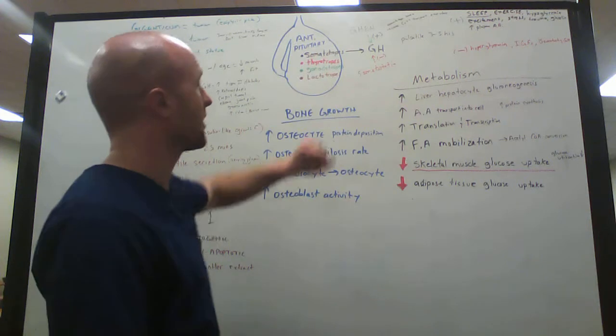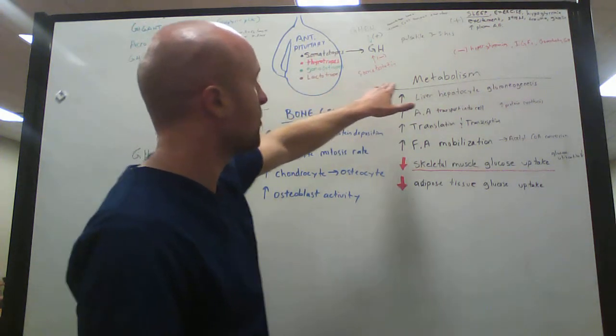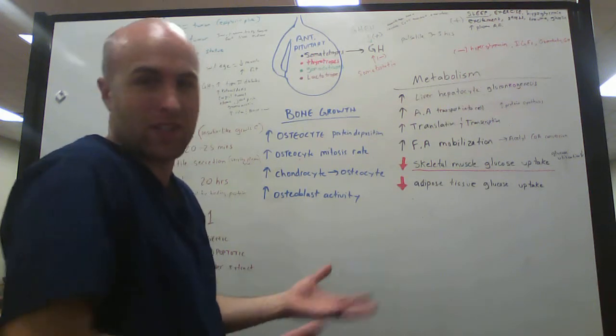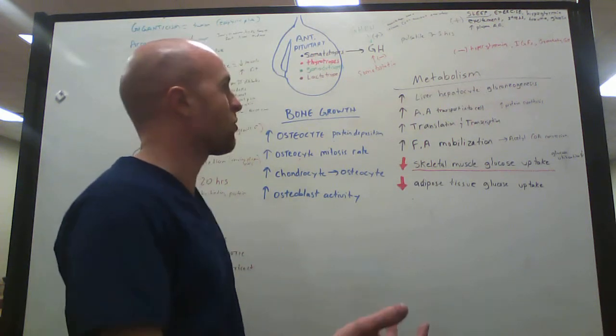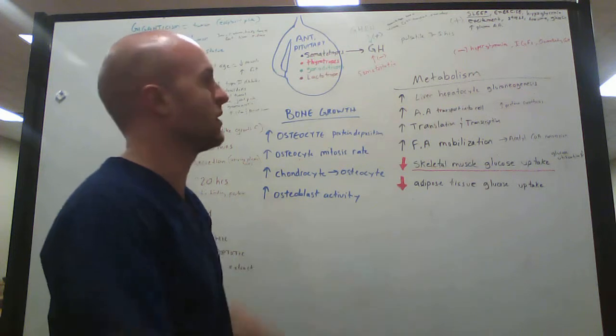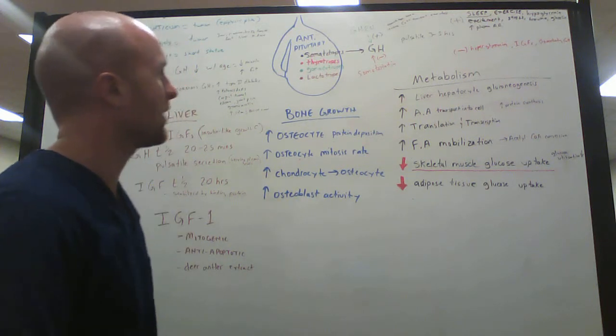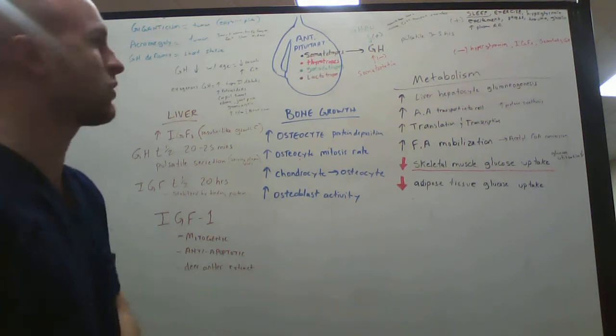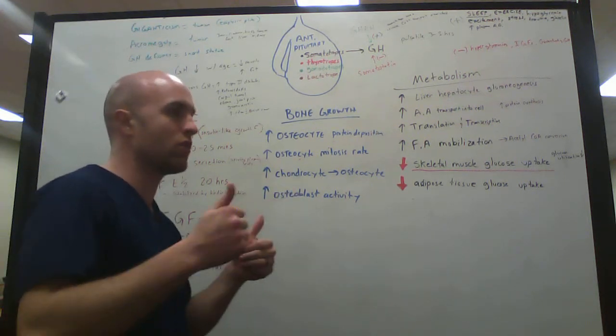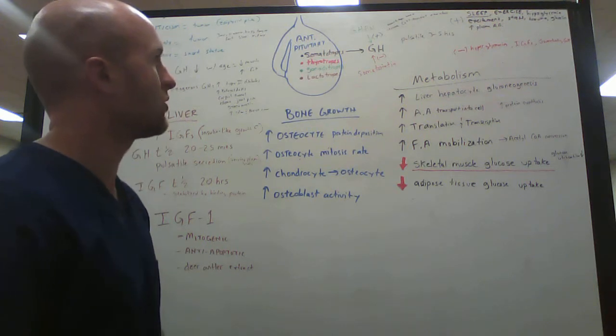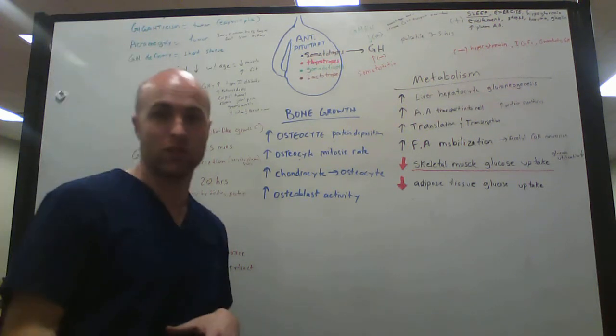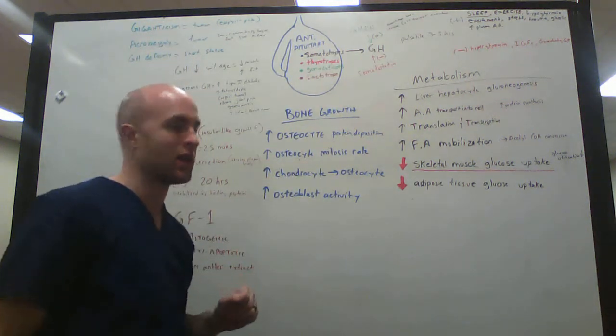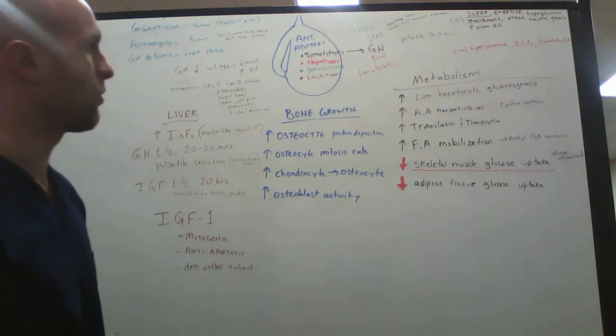On the flip side, what are things that are going to cause decreasing growth hormone? I already mentioned somatostatin. Also, having lots of growth hormone will cause it—it's a negative feedback. So the more growth hormone you have floating around, it's going to start inhibiting itself. Also, IGFs, which stands for insulin-like growth factor, which is released in response to growth hormone, will decrease growth hormone levels. Hyperglycemia also causes less growth hormone to be released, whereas hypoglycemia causes more.